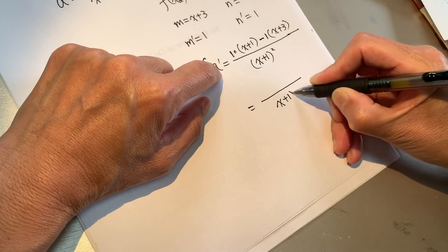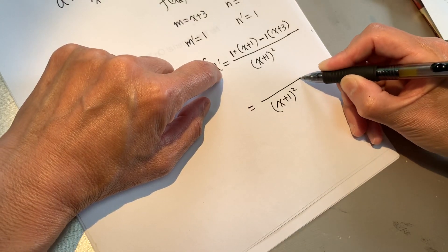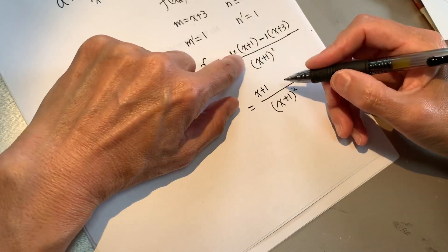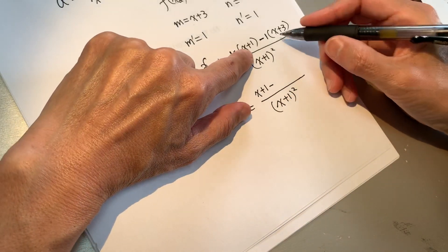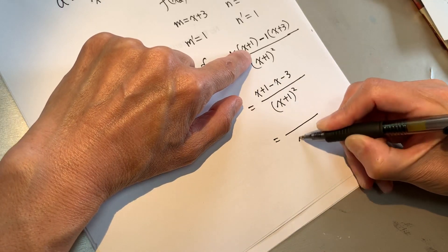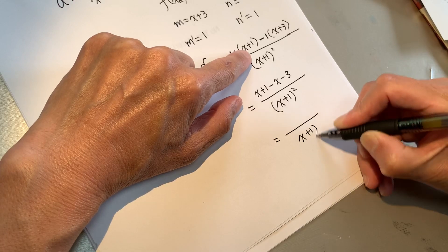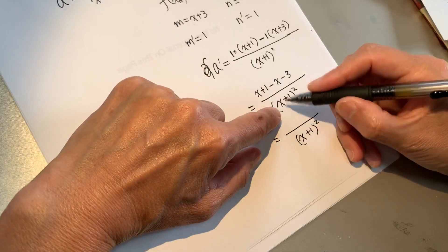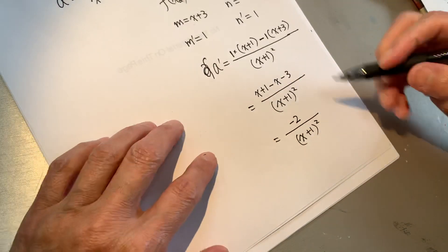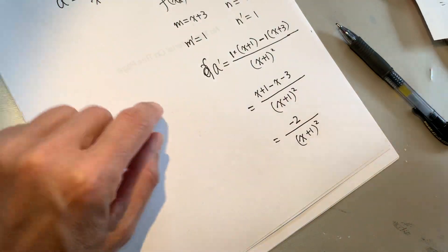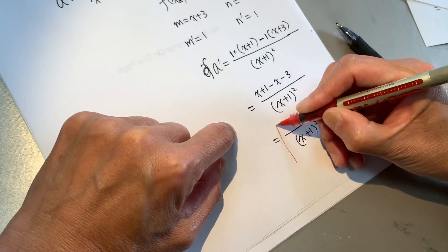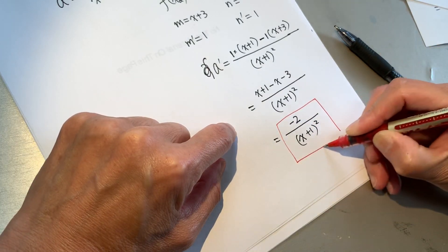Now we need to clean it up a little bit. x plus 1 minus x minus 3 over x plus 1 squared, and the numerator is negative 2. So this is prime of a: negative 2 over x plus 1 squared.